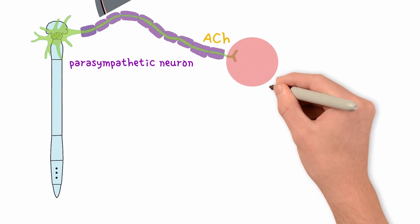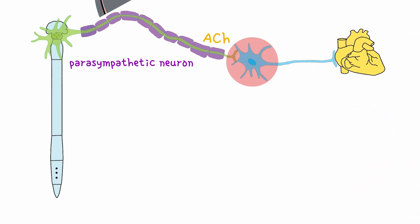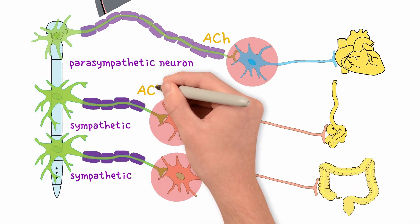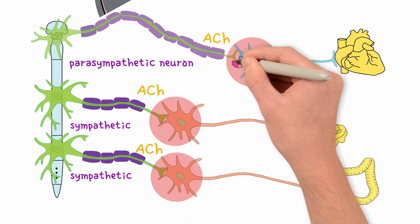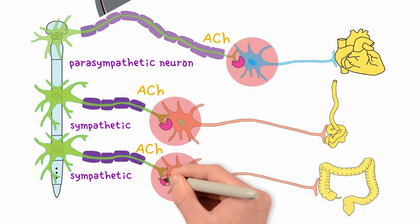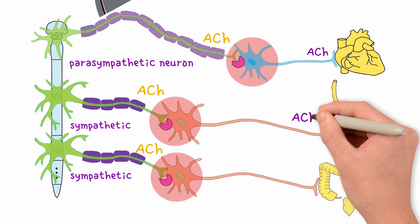Here, they synapse with the postganglionic neuron, and this is critical. All autonomic ganglia, sympathetic and parasympathetic, use acetylcholine, and they all receive that signal through nicotinic receptors. From the ganglia, the postganglionic neuron sends acetylcholine to the target organ.